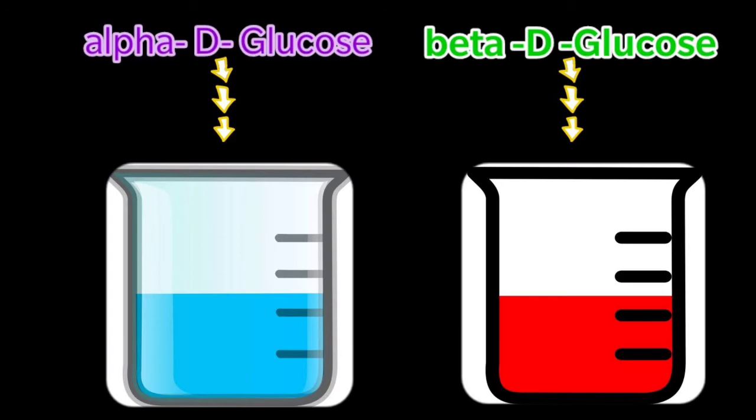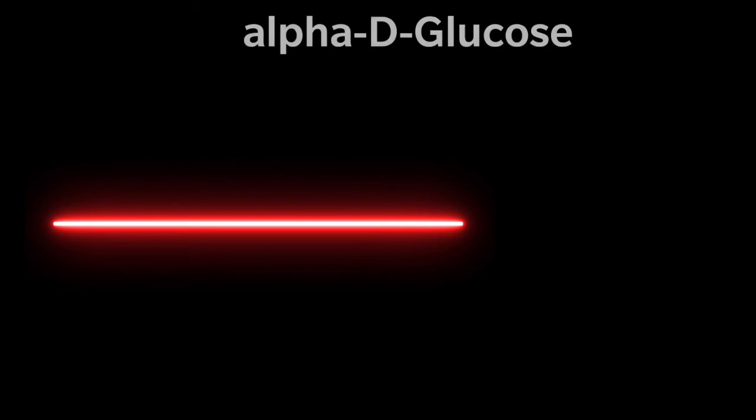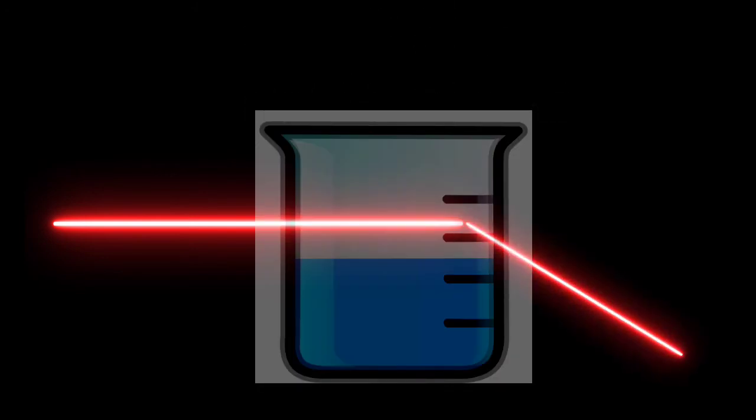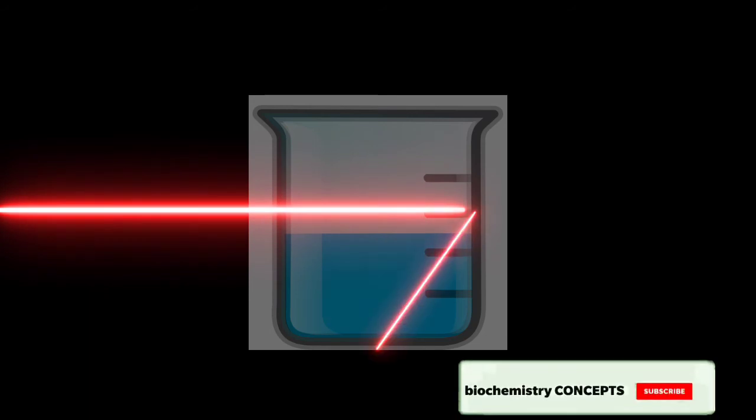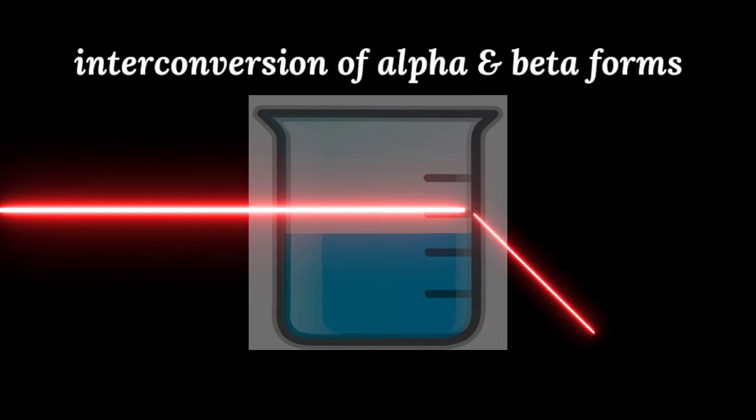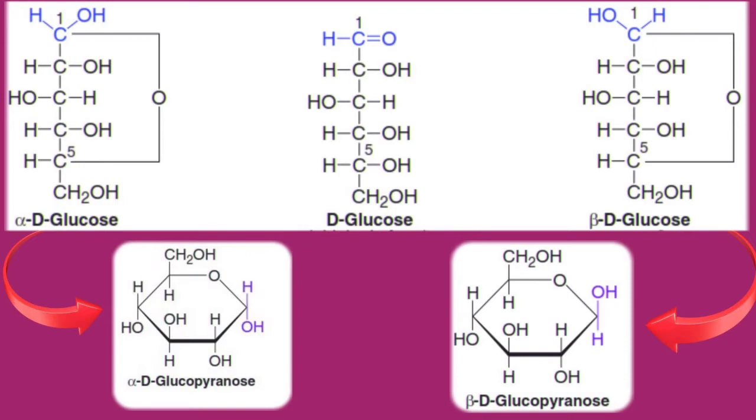So one solution contains alpha-D-glucose and the other solution contains beta-D-glucose. When light is passed through the solution which contains alpha-D-glucose, it shows a specific rotation of plus 112 degrees. Gradually this rotation changes to a fixed constant rotation of 52.7 degrees after few hours. So during this time, alpha form changes into beta form and beta form changes into alpha form. So this change occurs through a straight chain or open chain form.